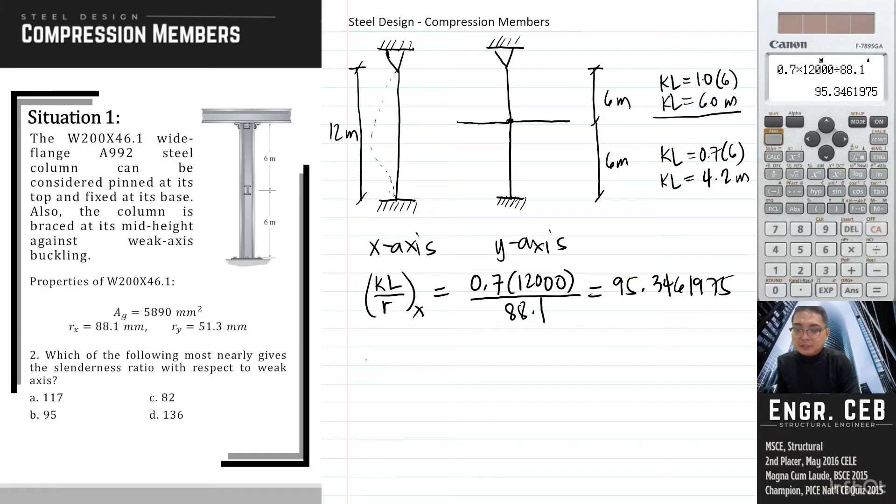We will use this in determining the slenderness ratio with respect to y-axis. We have 1.0 times 6,000 divided by the radius of gyration with respect to y, that is 51.3. We have 116.959, and that is letter A.